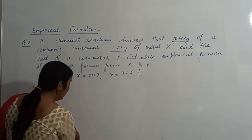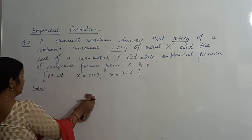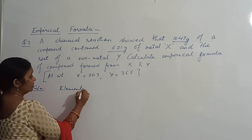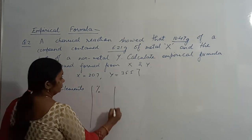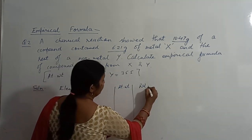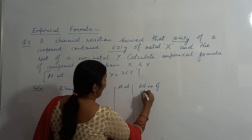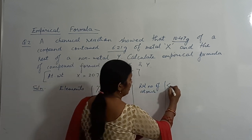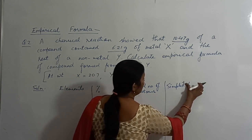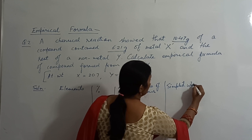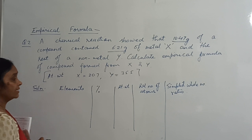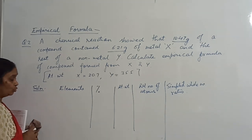In that table, we put the various things, data given in the question. So the table was: elements, percentage, atomic weight, relative number of atoms, and the last was simplest whole number ratio. So this is how you are going to make the table.